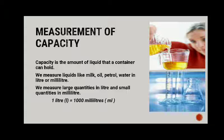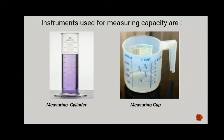We measure large quantities in liters and small quantities in milliliters. One liter equals one thousand milliliters. Instruments commonly used for measuring capacity are the measuring cylinder and the measuring cup.